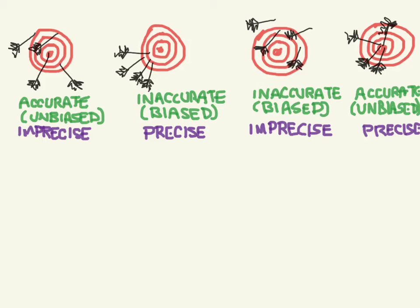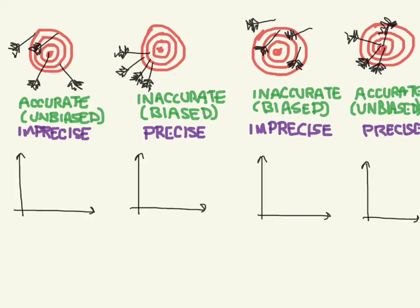So what does this have to do with biostatistics? Let's now look at some distributions and apply these same terms to them. Here we've got some axes, and the bullseye will be the truth, which is the population mean. So this mu is what we're looking for — that's the truth.